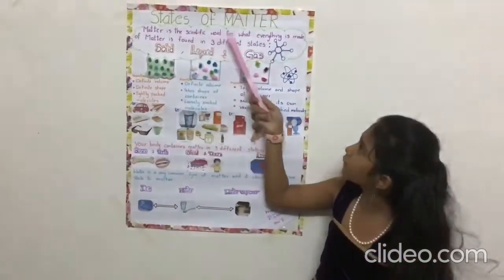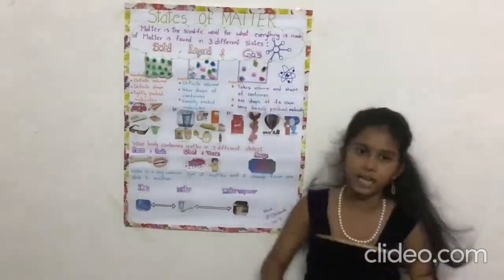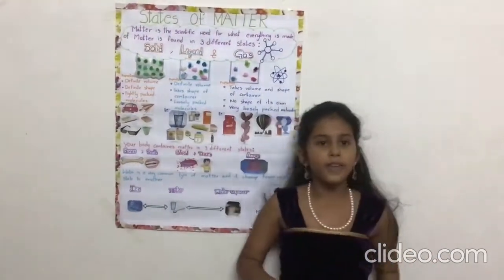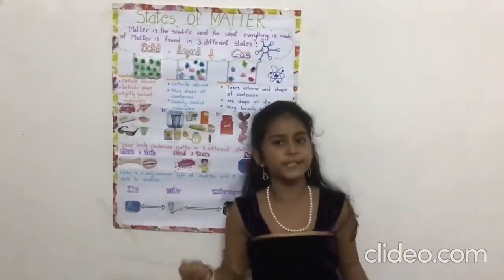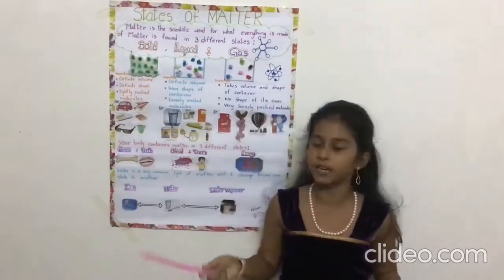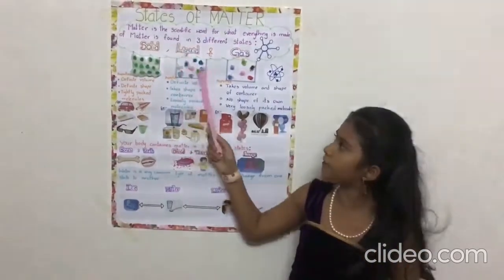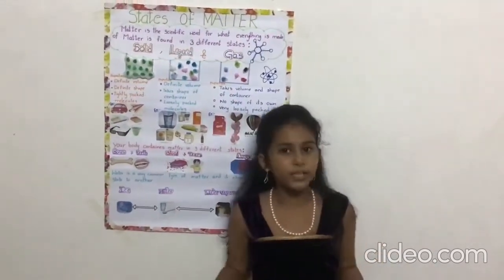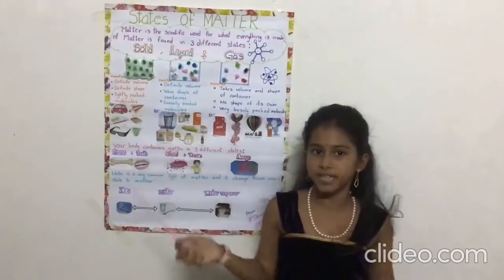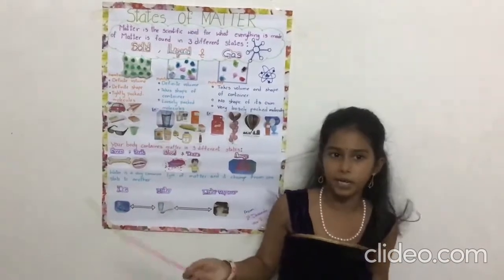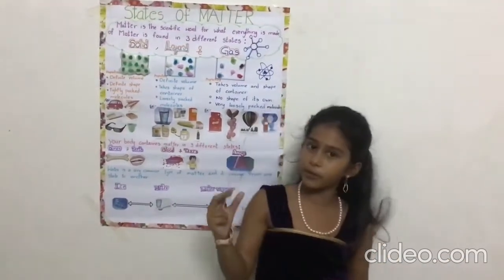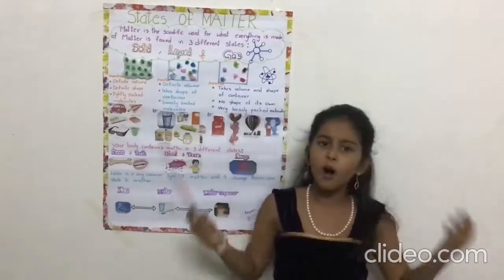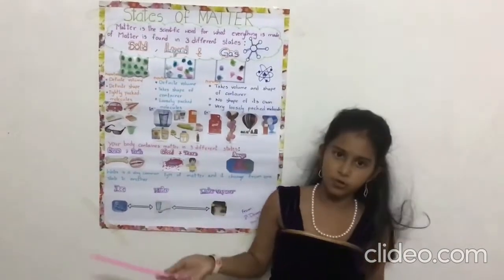Matter is the scientific word for what everything is made of. Now there are three states of matter because of the arrangement of the particles. Now whenever we talk about states of matter, we need to know some of the word meanings which are hard or often used.